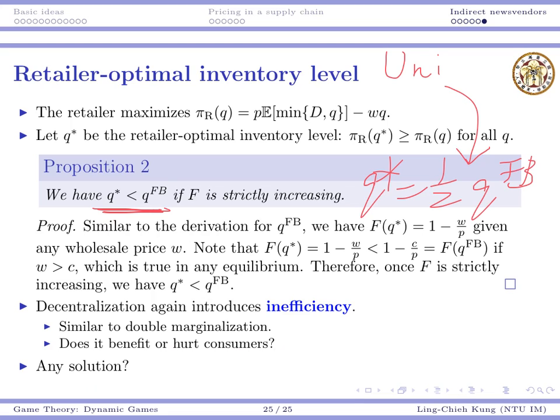We then ask: is there any solution to resolve this inefficiency? In a decentralized system, can we provide incentives to eliminate the inefficiency and induce more efficient behaviors? That will be the topic for next week.